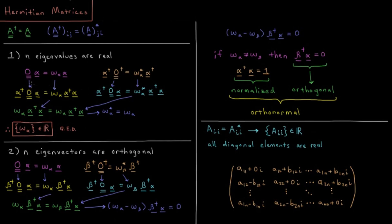We're going to multiply on the left by row vector alpha dagger on both sides. On the left we get alpha dagger O alpha. Omega is just a scalar constant, so we can factor that out once we multiply by alpha dagger, giving us omega alpha dagger alpha. On the right, we multiply by alpha on the right, so we have alpha dagger O alpha equals omega star alpha dagger alpha.